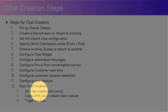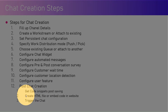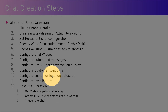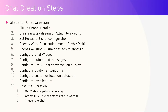You need to get the code snippets after saving the channel, and then you can either create a simple HTML file or embed the code in your existing corporate website. Then you trigger the chat — that's how the chat gets triggered and configured within your organization. I'm going to show that in the live demo.